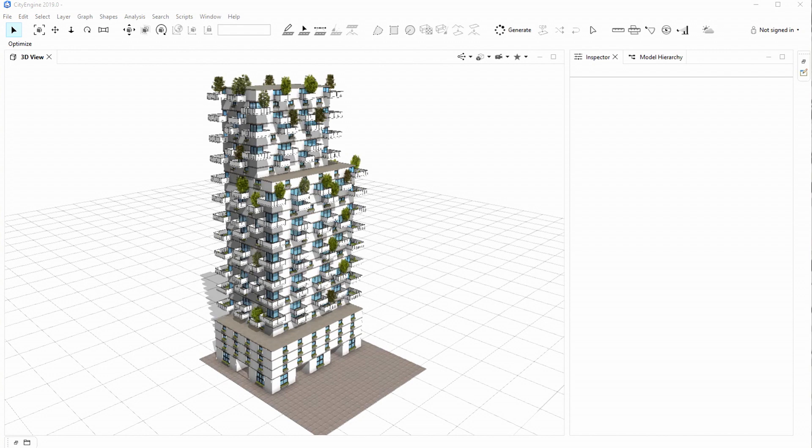So my question now was: how should I place and distribute the balconies and windows on these building facades in order to maximize the number of greeneries, number of trees on this building? Yes, nowadays we can have trees on our balconies, that's awesome.